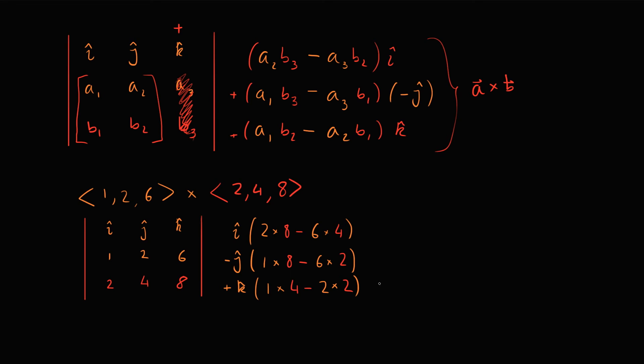Now, we can simplify this. 2 times 8 is 16, and we'll be subtracting 24, which gives us negative 8 times I hat. 1 times 8 is 8, and 6 times 2 is 12. This is going to give us negative 4, but remember we've got a minus sign out here. We need to bring the minus sign in. Negative 4 becomes a positive 4 times J hat. And lastly, our K hat component is 1 times 4, 4, minus 2 times 2, which is 4. So our K hat component is 0, so we don't really need to write anything down, but for the sake of writing it, we will. And this is how we calculate our cross product.